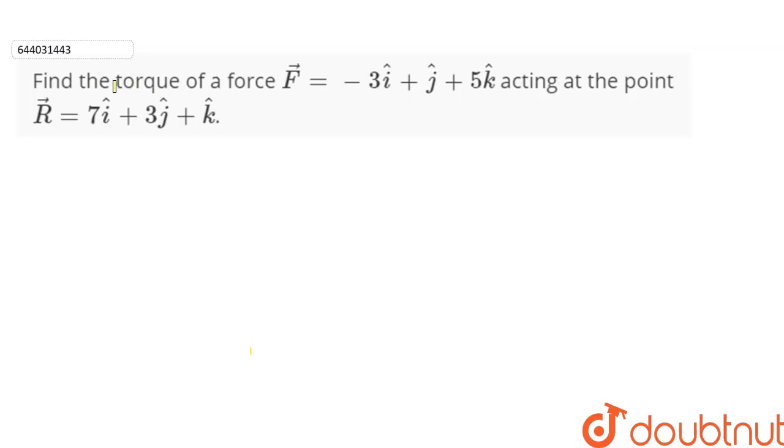In this question we need to find the torque of a force f vector which is equal to minus 3i cap plus j cap plus 5k cap acting at the point r vector which is 7i cap plus 3j cap plus k cap.